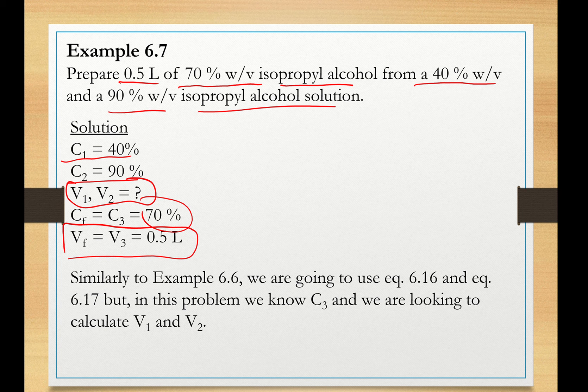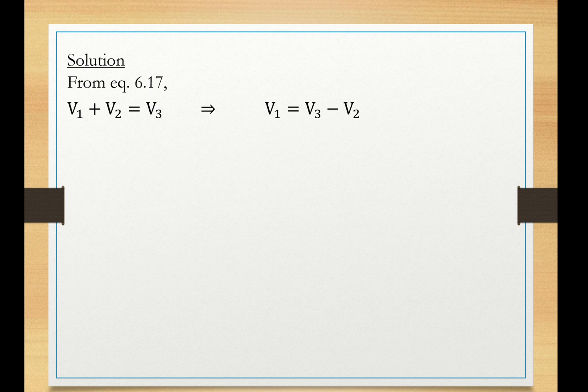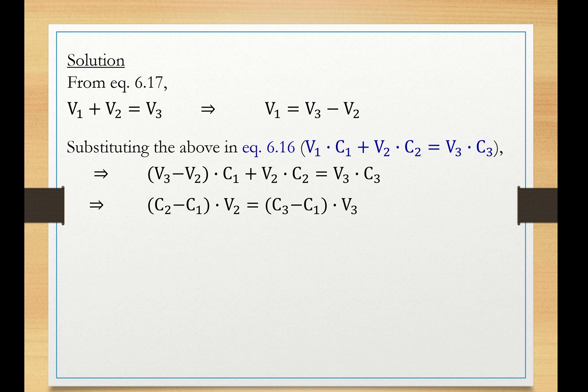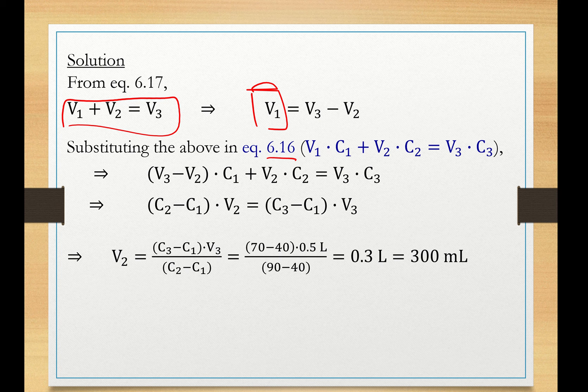We seek to determine the volumes of the two corresponding solutions. Now, we work the same way, using equations 6.16 and 6.17. Starting from equation 6.17, we know that V3 is half a liter. And therefore, we solve this equation for V1 and substitute V1 into equation 6.16. After you carry out the algebra, you end up with V2 being equal to (C3 - C1) times V3 over (C2 - C1).